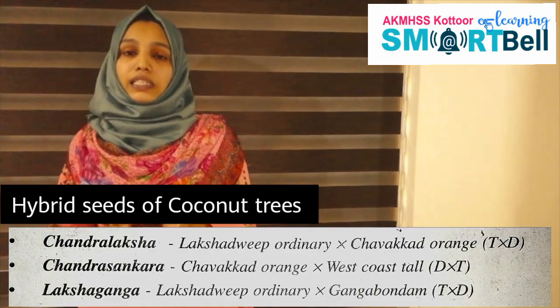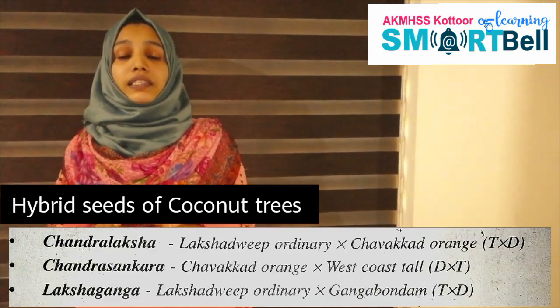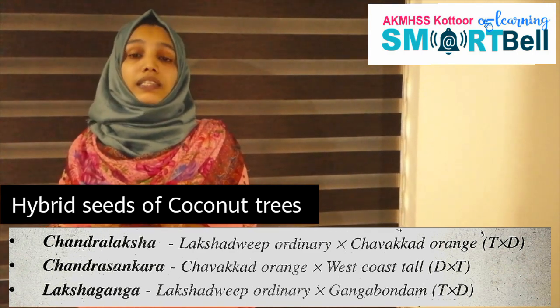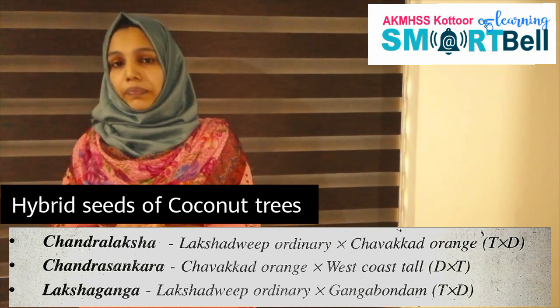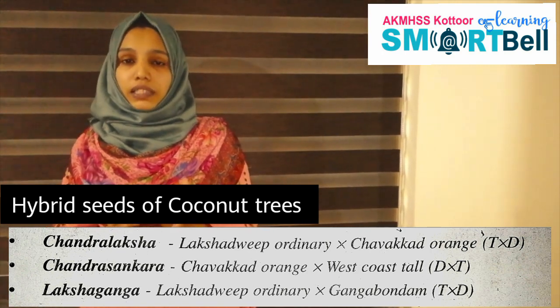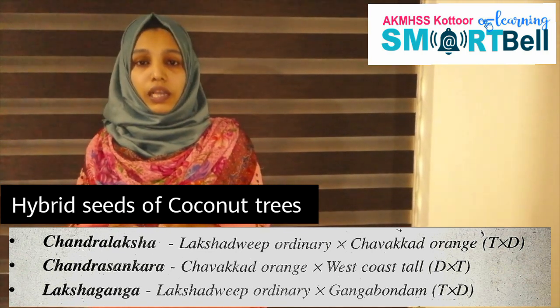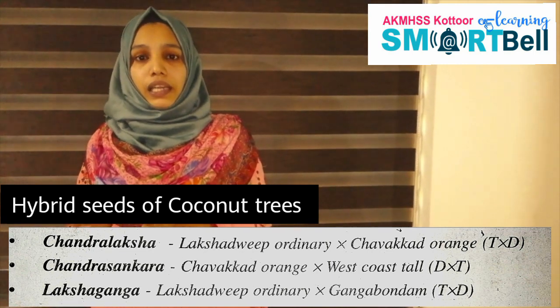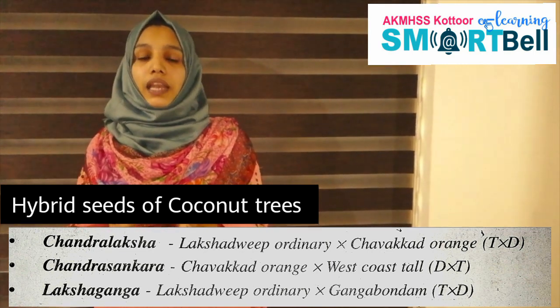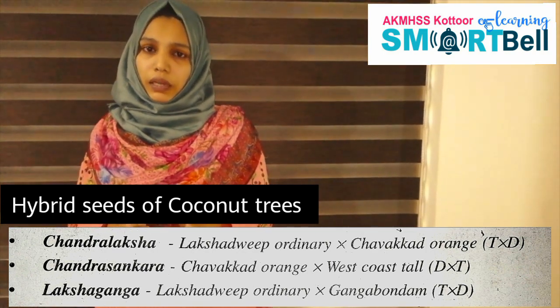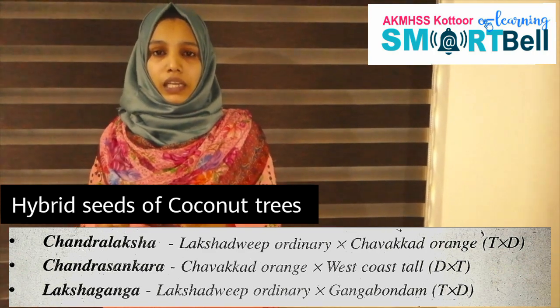Examples of T×D varieties of coconut trees are: the first one is Chandra Laksha, which is the combination of Lakshadi Ordinary and Chavakar Orange, represented as T×D. The second one is Chandra Shandara, the combination of Chavakar Orange and West Coast Tal, represented as D×T. The third one is Lakshhaganna, the combination of Lakshadi Ordinary and Ganna, represented as T×D.